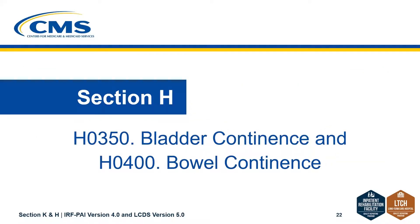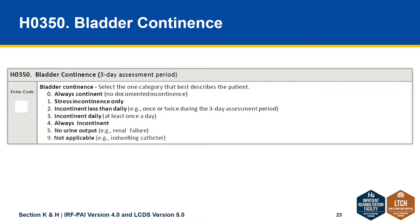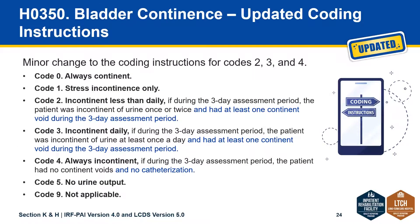Now let's move to Section H: H0350 bladder continence and H0400 bowel continence. Here is a screenshot of the H0350 bladder continence item, which is for a three-day assessment period. This item is unchanged, but there is some additional information added to the coding instructions.